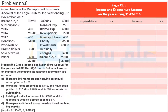Prepare the club's income and expenditure account for the year ending 31st December 2016 and its balance sheet as on that date, after taking the following information into account. There are 500 members, each paying an annual subscription of Rs. 15. Municipal taxes of Rs. 400 per annum have been paid up to 31st March 2017. Rs. 500 for salaries is outstanding. Building stood in the books at Rs. 50,000 and it is required to write off depreciation at 5%. 3% interest has accrued on investment for 5 months.